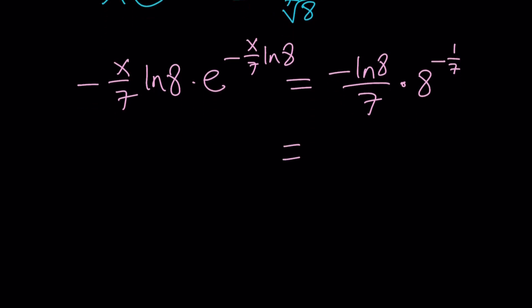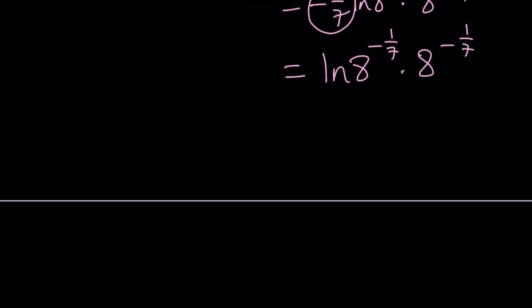Now, we're going to start manipulating the right hand side because the left hand side is ready to go. On the right hand side, we can write this as negative 1 over 7 ln 8 times 8 to the power negative 1 over 7. And then we can bring this up top and write it as ln 8 to the power negative 1 over 7 times 8 to the power negative 1 over 7. I think at this point it makes more sense to keep the negative 1 over 7 here instead of putting it over there.